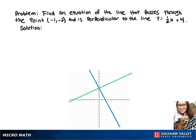To find an equation of the line that passes through negative 1, negative 2, and is perpendicular to y equals 1 half x plus 4...